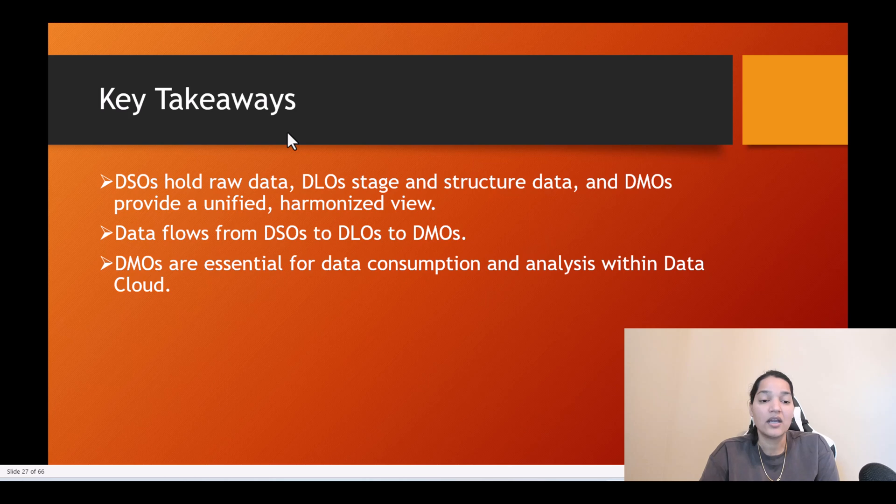The main key takeaways: DSOs hold raw data, DLOs stage and structure the data, and DMOs provide a unified harmonized view of your data. Data flows from DSOs to DLOs to DMOs. So data is flowing from the data source object to the data lake object and then finally to the DMOs. DMOs are essential for data consumption and analysis within the data cloud. If you have to do any kind of analysis, you do it on the DMOs, not on the DLOs. Any analysis or segmentation you have to do will happen on the DMO side.